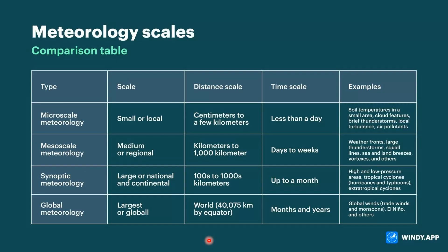This was a brief description of meteorology and the scales of meteorology. The comparison table shows: microscale meteorology operates at a small or local scale, from centimeters to a few kilometers, with a time scale of less than a day; mesoscale meteorology is medium or regional, from kilometers to 1,000 kilometers, lasting days to weeks; synoptic meteorology is for large, national and continental scales, ranging from 100 to 1,000 kilometers but with a time scale up to a month; and global meteorology is at the largest global level, with a distance scale of the entire world and a time scale of months to years.